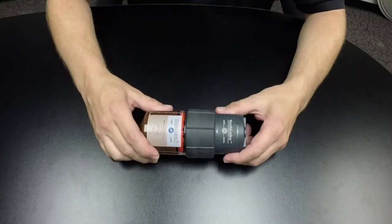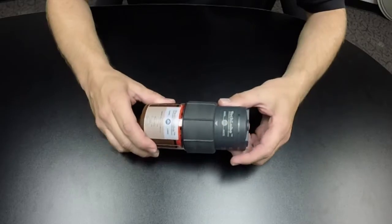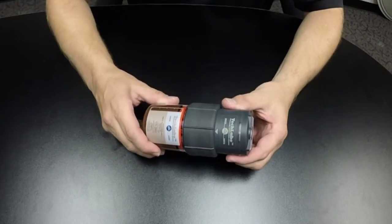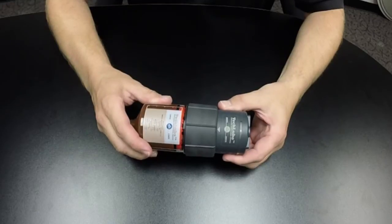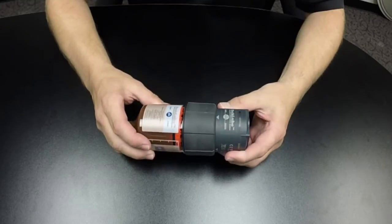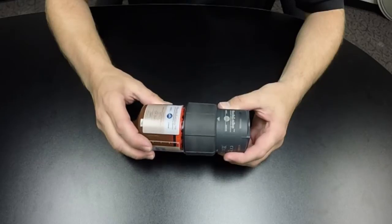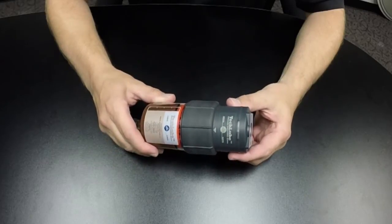The new SWECO TechLube 2 system is an automatic grease lubrication system that provides optimum lubrication of the motion generator bearings. It eliminates manual re-greasing and assures the bearings are being re-greased to provide longer bearing life.